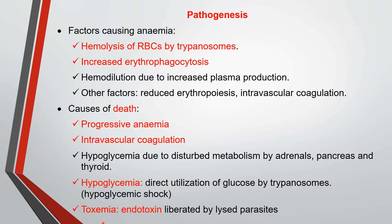The fourth reason for death is toxemia. Trypanosomes produce endotoxins that are liberated by lysed parasites. These are the causes of death. Anemia and death are the prominent symptoms in acute cases.